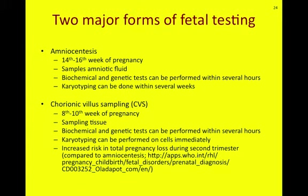There have been some reports showing an increased risk of total pregnancy loss with chorionic villus sampling occurring in the second trimester, compared to amniocentesis. A link is provided to look over some of the reported risk factors comparing the two major types of fetal testing. There are also new forms of testing currently being developed and tested.